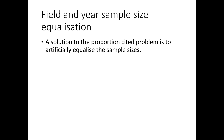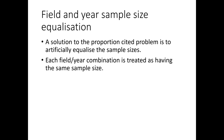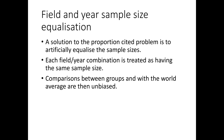We deal with this problem by field and year sample size equalization — a different technique to the one used for MNLCS. We're going to artificially equalize the sample sizes: each field-year combination will be treated as having the same sample size. If we do this, then comparisons between groups and with the world will be unbiased.